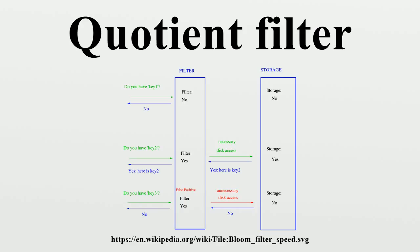The former result is definitive, i.e., the test does not generate false negatives. But with the latter result there is some probability epsilon of the test returning 'element is in the set' when in fact the element is not present in the set. There is a trade-off between epsilon, the false positive rate, and storage size. Increasing the filter's storage size reduces epsilon.